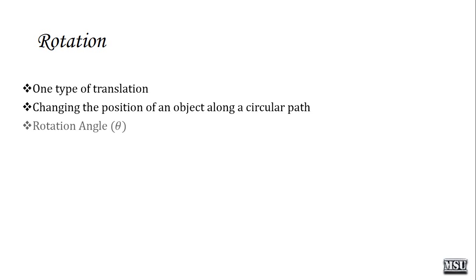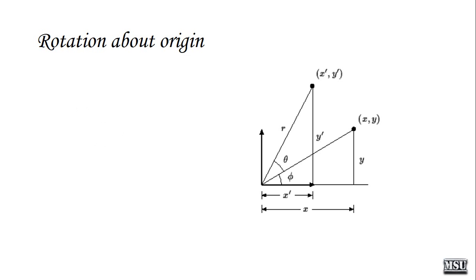Let's derive a formula for rotation. To perform rotation, we need the rotation angle theta, and the pivot point (xr, yr). This pivot point is optional. If we do not provide this pivot point, then we perform rotation with respect to the origin, that is (0, 0). A point x, y is rotated and now the point is located at x dash, y dash.